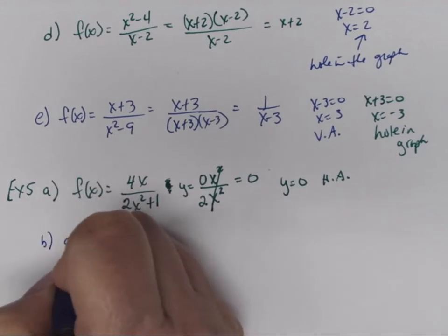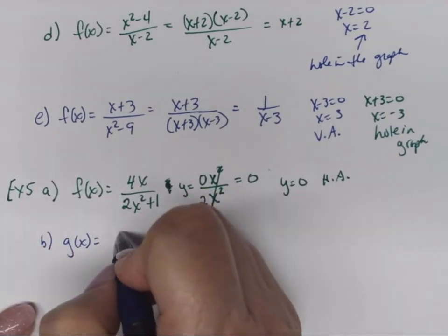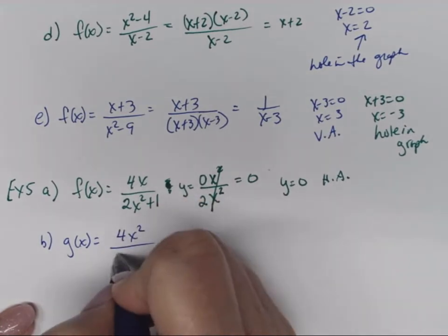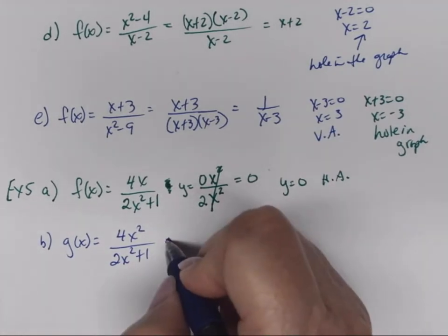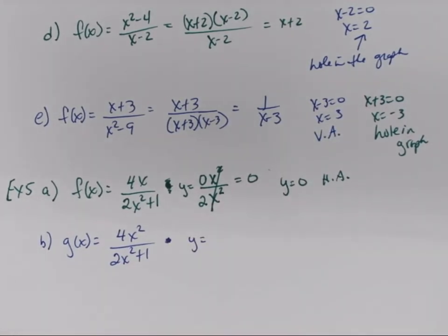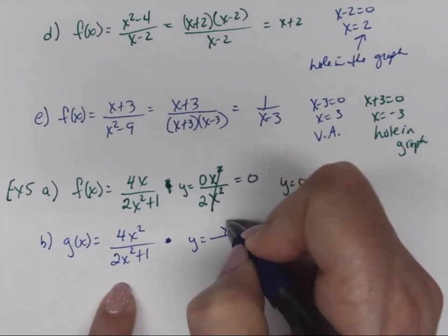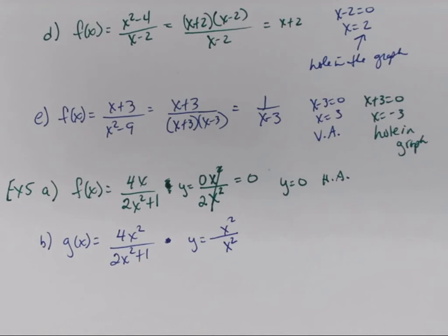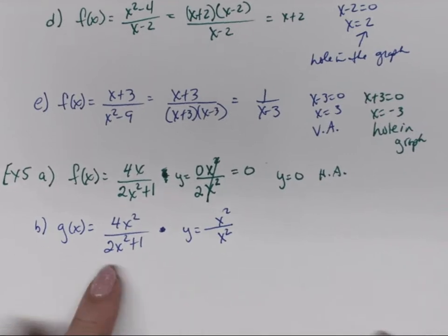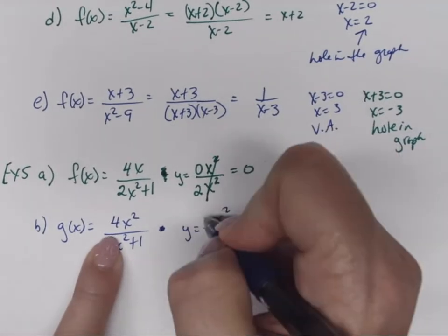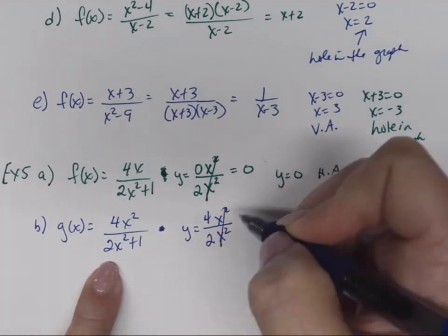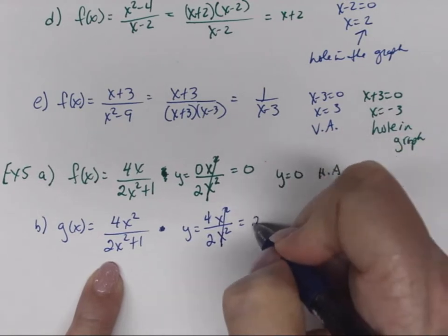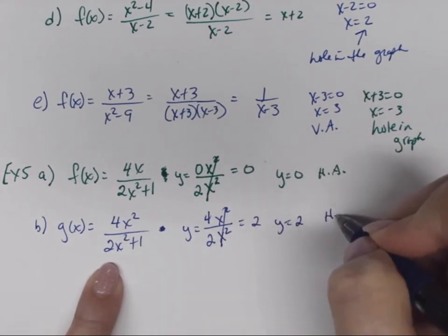Part B: g(x) = 4x²/(2x²+1). The highest degree is again x². How many x²'s on top? Four. On the bottom? Two. The x²'s cancel, giving 4/2 = 2. So y = 2 is the horizontal asymptote.